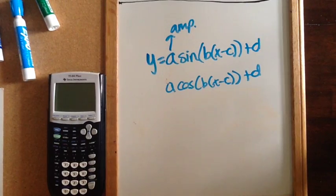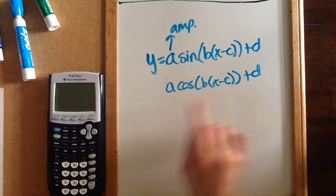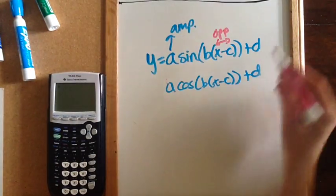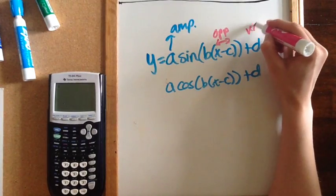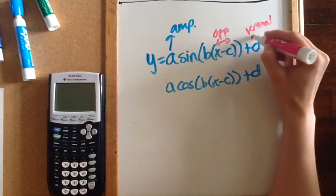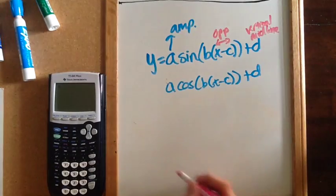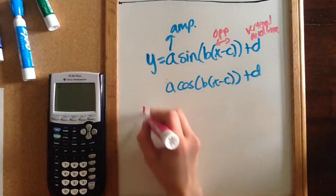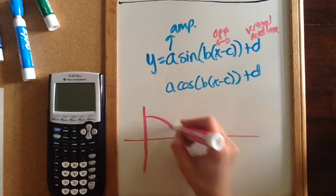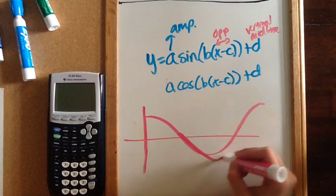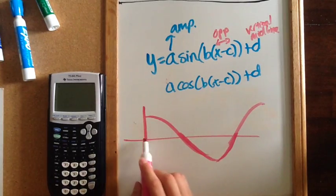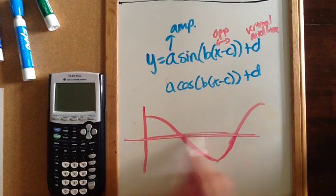The c value is the horizontal shift, and it goes the opposite direction horizontally inside the parentheses. The d value is your vertical shift, which is also called the midline. Your midline is halfway in between your graph — so this part here would be my midline.